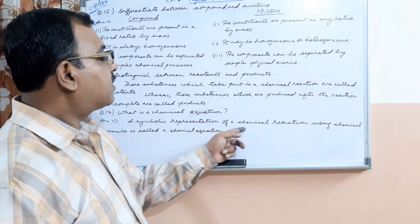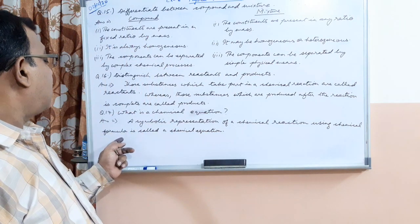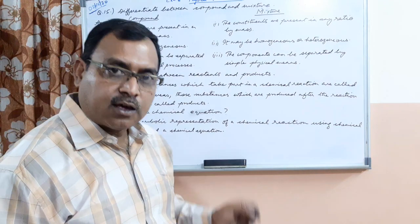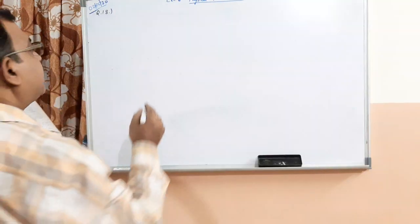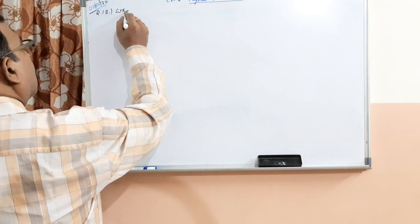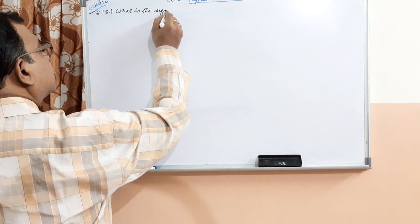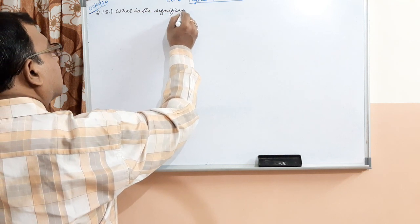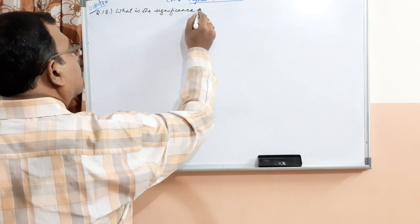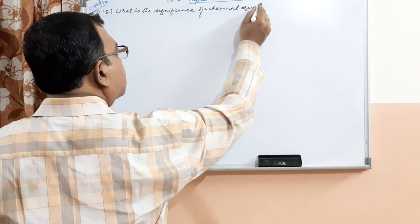Answer: a symbolic representation of a chemical reaction using chemical formula is called a chemical equation. Question 18: what is the significance of a chemical equation?